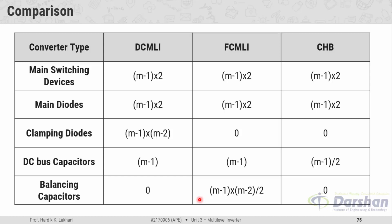Now let us compare the three types of multilevel inverters: diode clamp MLI (DC MLI), flying capacitor MLI (FC MLI), and cascaded H-bridge MLI (CHB). For main switching devices per leg, all three require (M-1)×2 IGBTs where M is the number of levels. For main diodes, DC MLI needs (M-1)×2 diodes, FC MLI also needs (M-1)×2 diodes, and CHB also needs (M-1)×2 diodes.